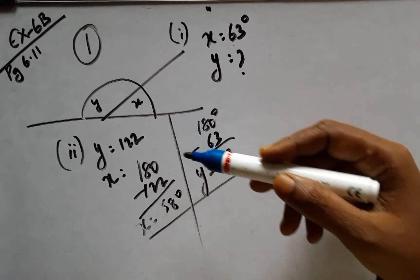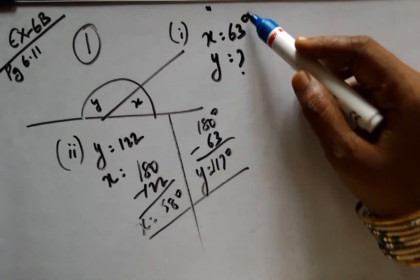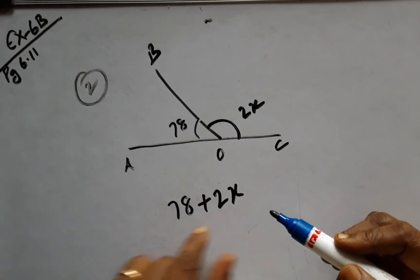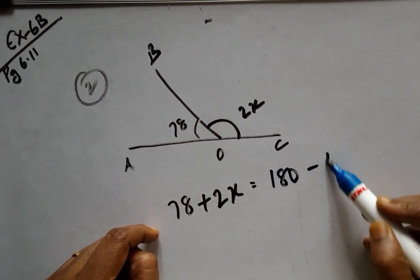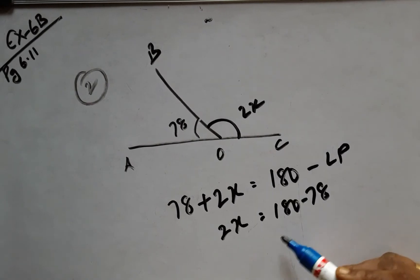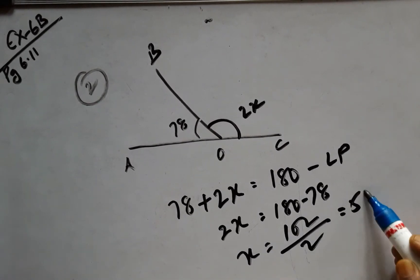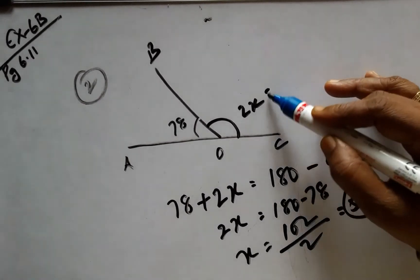The systematic procedural concept of this problem: you have to address it as the linear pair. Once again, the sum of these two angles is 180 because they are a linear pair. And this being 102, x is supposed to be 51 degrees. Once you have this, this is the answer.